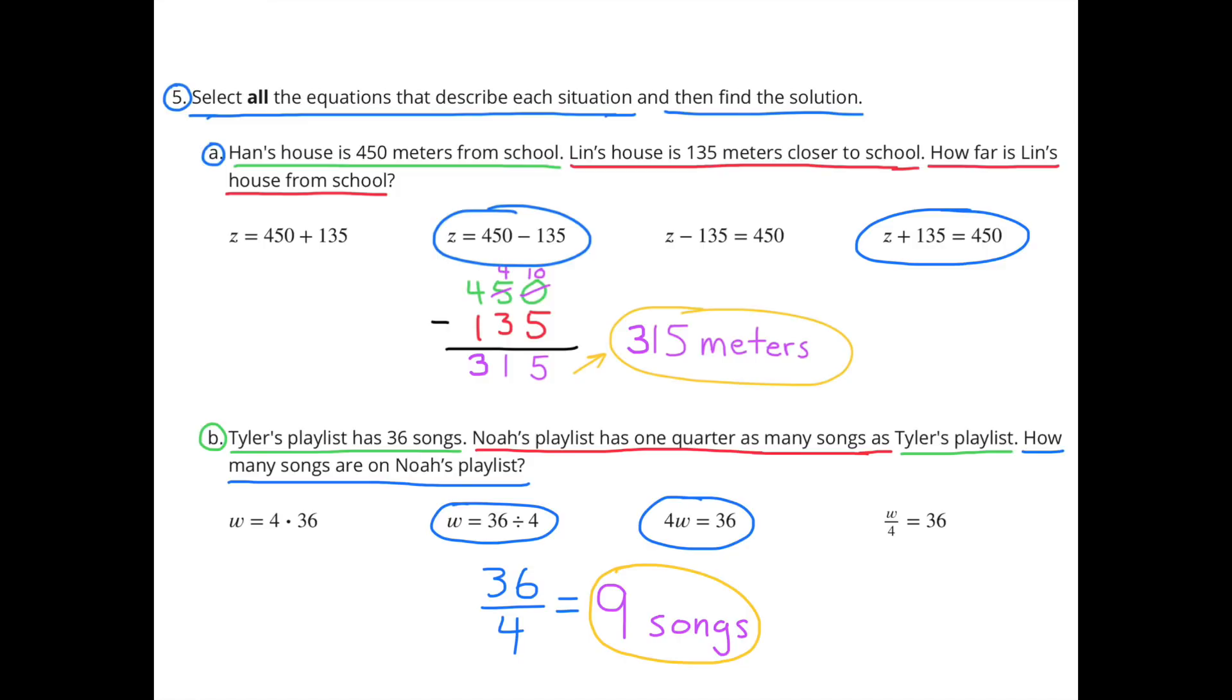The number of songs in Tyler's playlist, 36, divided by 4 equals the number of songs in Noah's playlist. And that's 9. There's 9 songs in Noah's playlist.